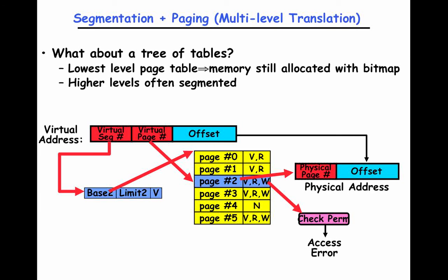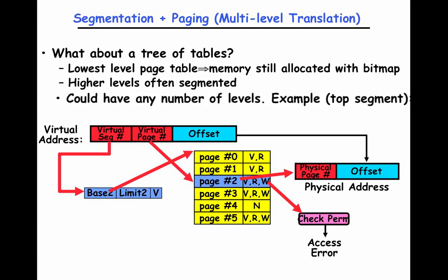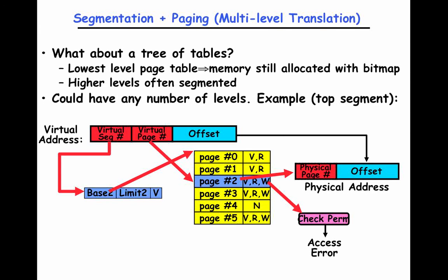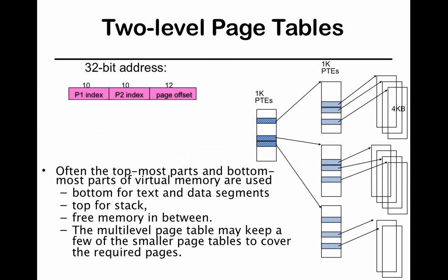Another approach is a tree of page tables, where the lowest level of page table memory is still allocated with a bitmap, the higher levels are often segmented, and you can have any number of levels. In the next segment we'll look at the different data structures and organizations for page tables.